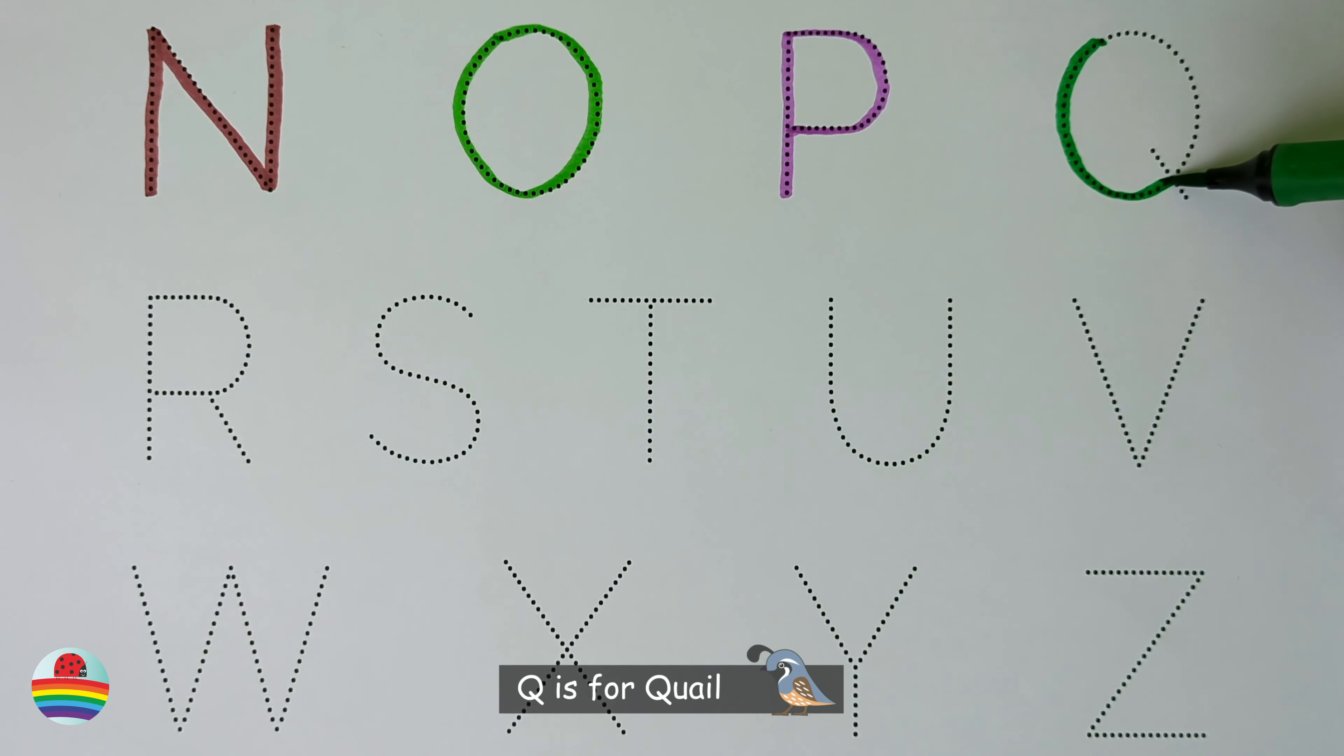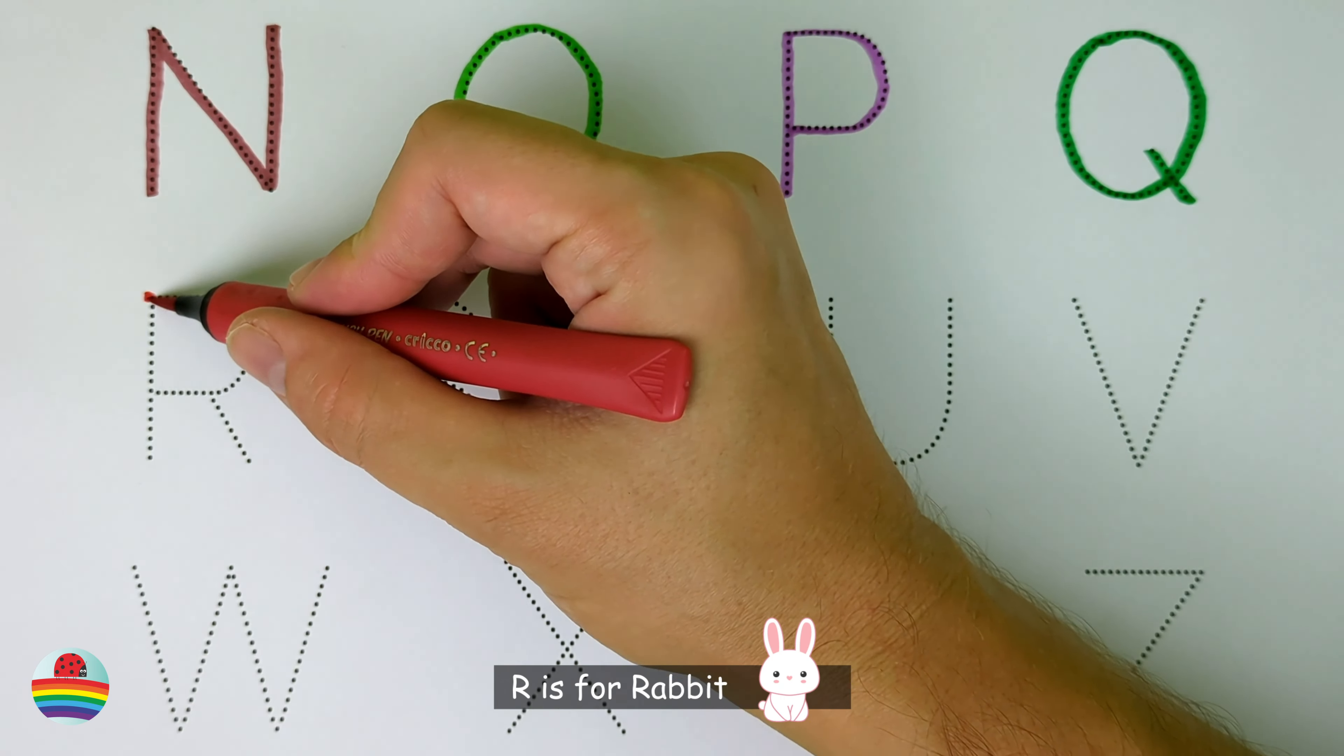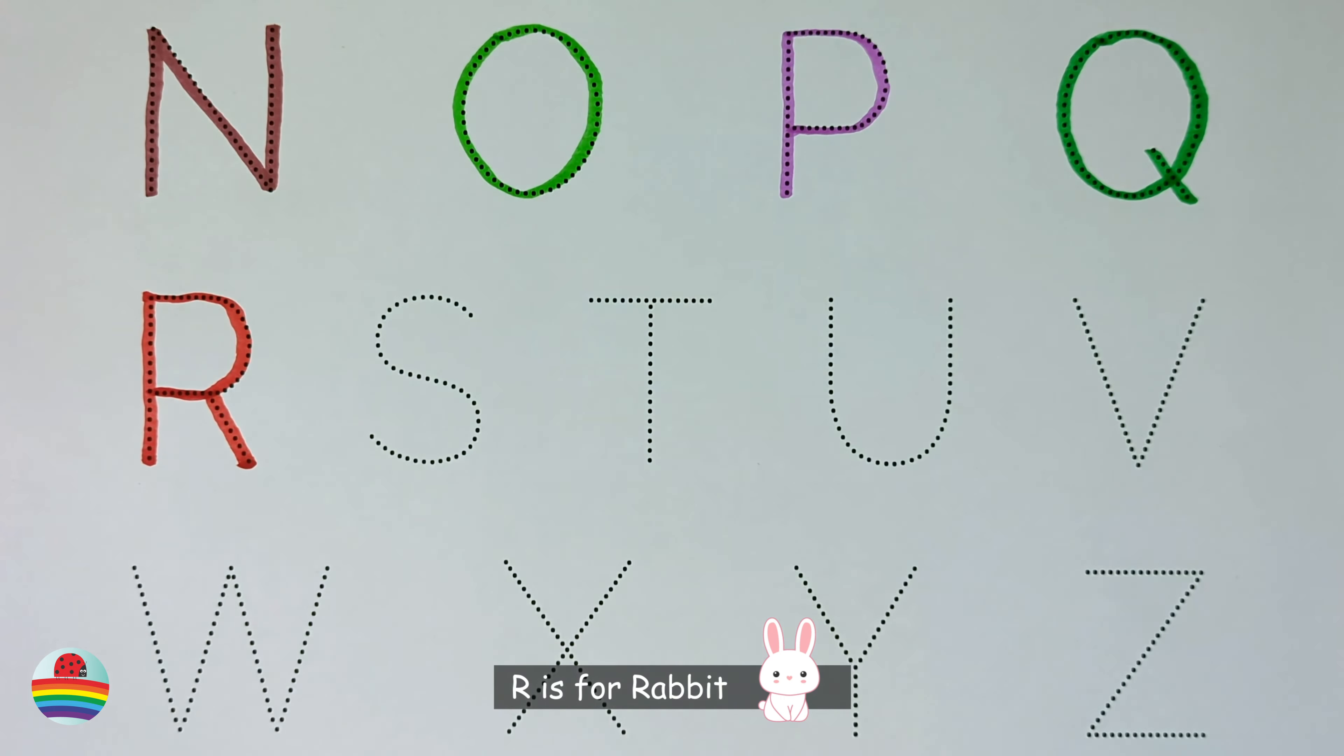Q. Q is for quail. Q. R. R is for rabbit. R.